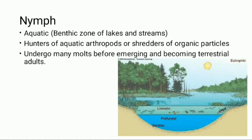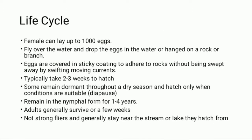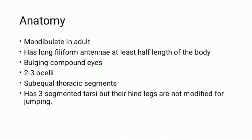The nymphs of stoneflies have long antennae, chewing mouthparts, and two long cerci. Gills, when present, are on the thorax or the first two or three abdominal segments. As the name stoneflies implies, nymphs are commonly found on or under stones. Some species are herbivores but others are carnivores.